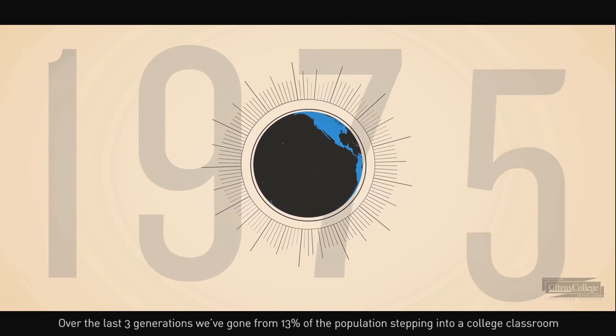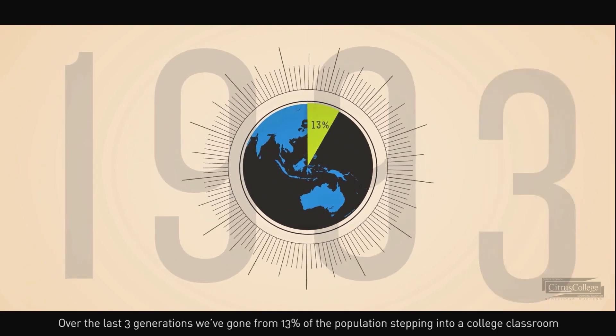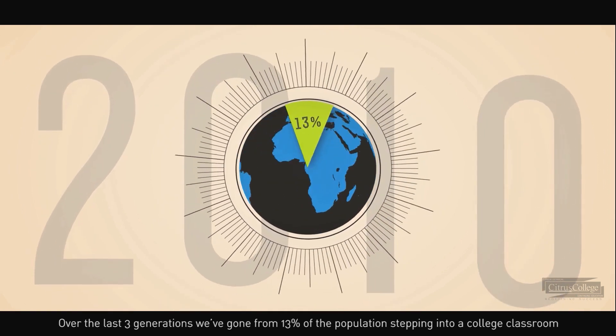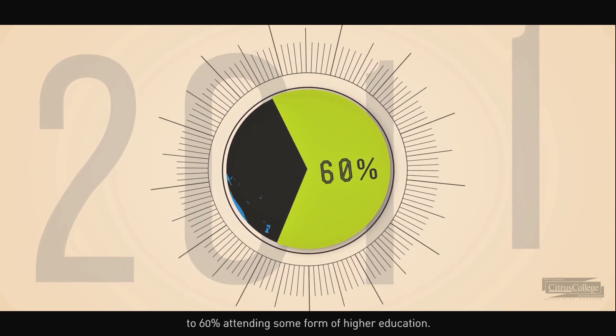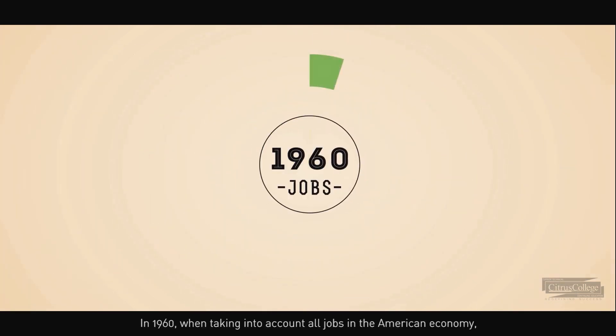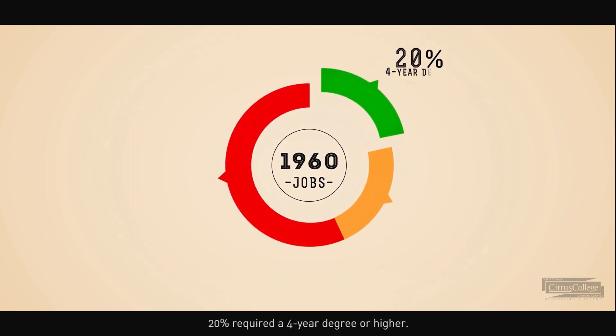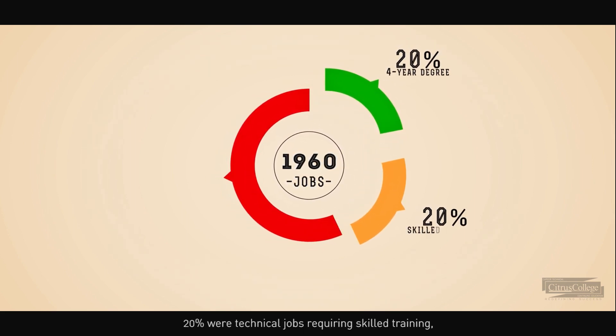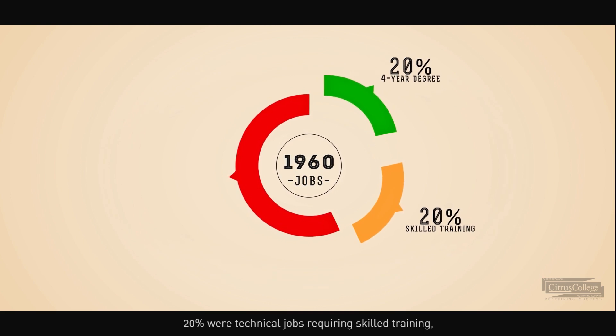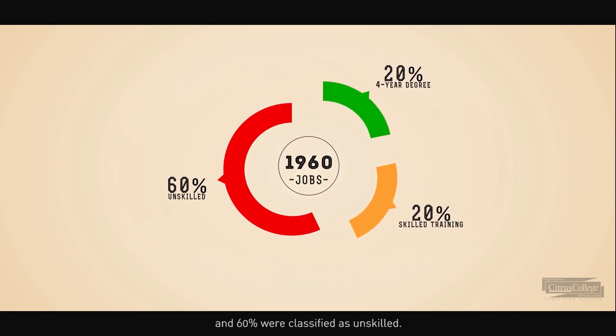Over the last three generations, we've gone from 13% of the population stepping into a college classroom to 60% attending some form of higher education. In 1960, when taking into account all jobs in the American economy, 20% required a four-year degree or higher, 20% were technical jobs requiring skilled training, and 60% were classified as unskilled.